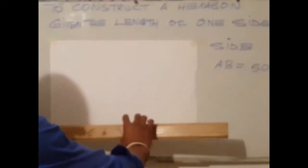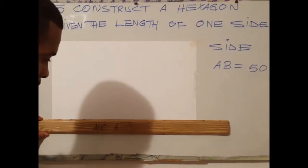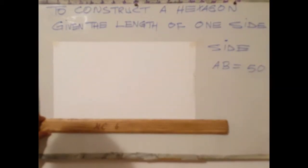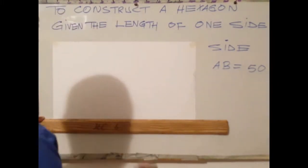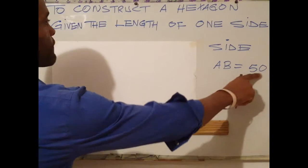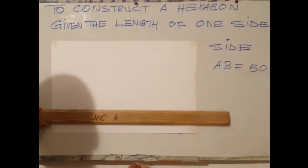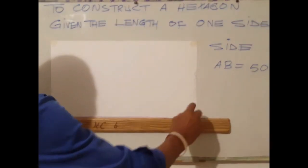The first step in constructing a hexagon is to draw the first side. I'll be drawing my first side. The length of one side is 50mm. I'll be drawing my first side as a line.